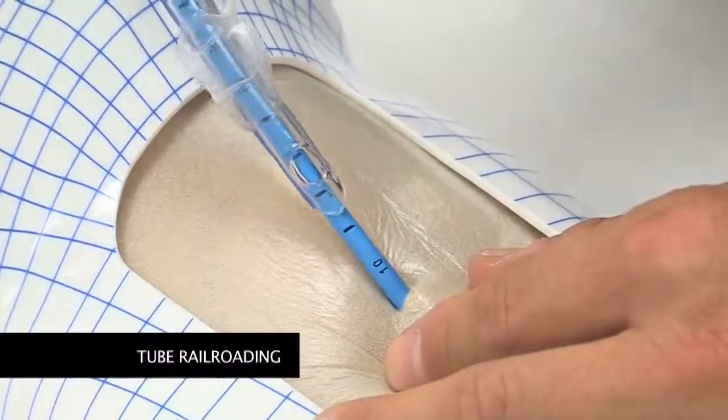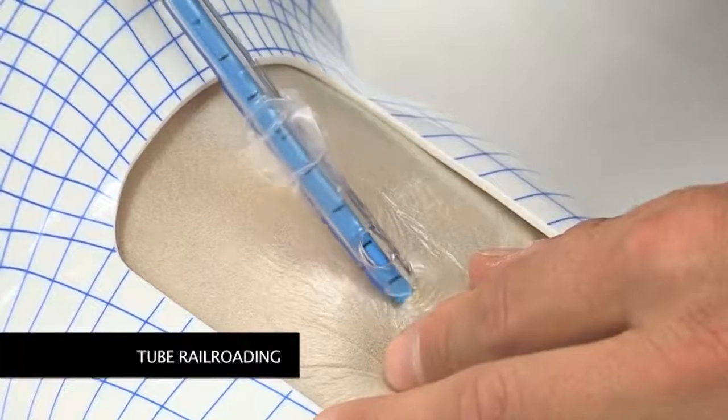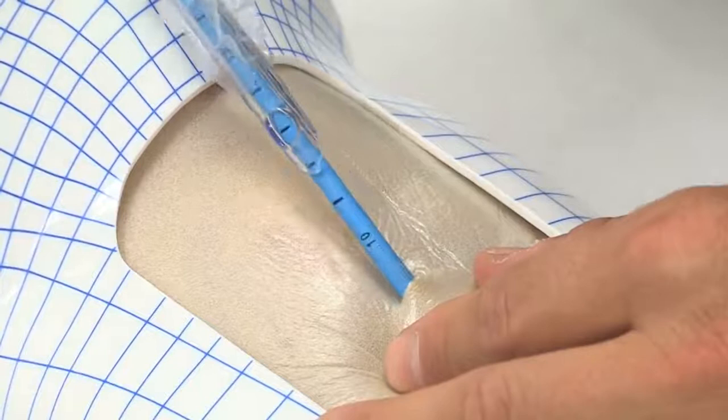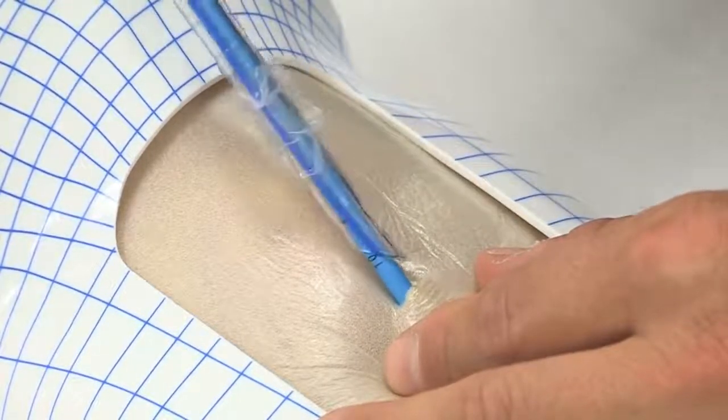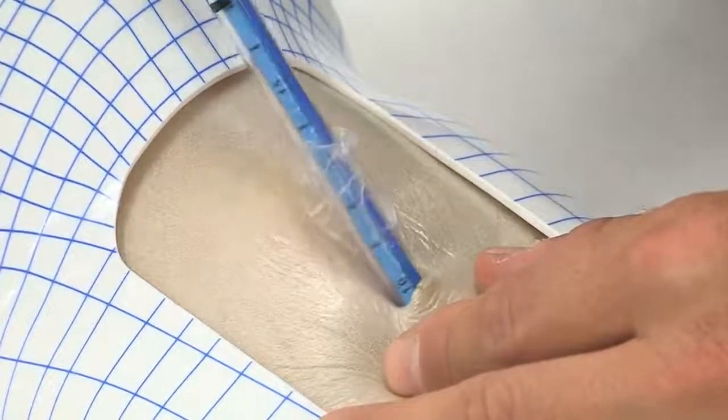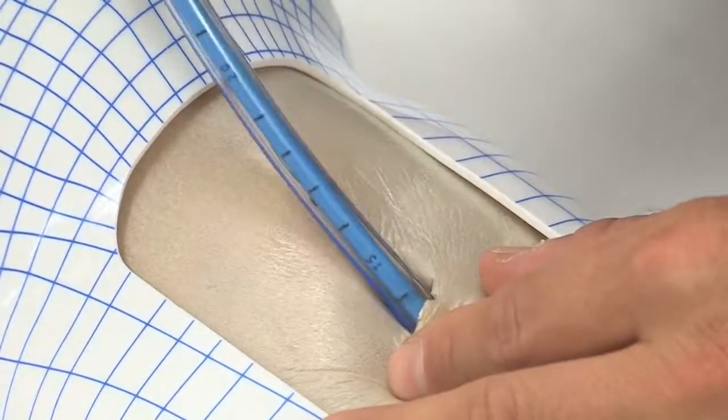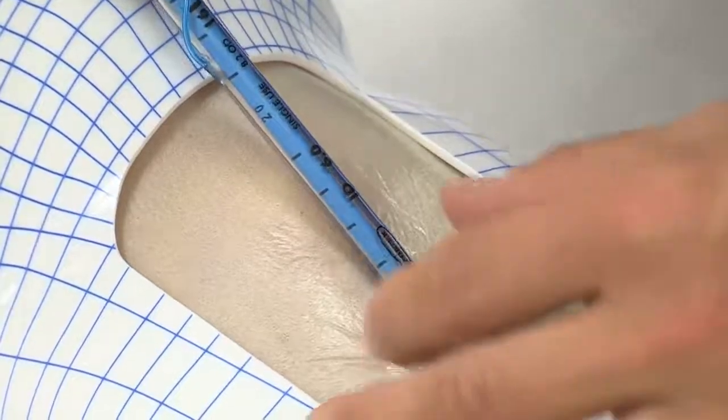Railroading a size 6 tube over the Frova bougie can result in the tip of the tube catching on the skin and subcutaneous tissues. By beginning and continuing rotation of the tube prior to and during railroading, tube insertion can be performed smoothly and safely.